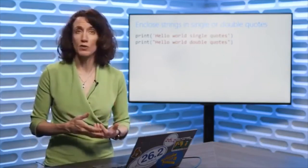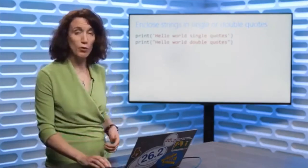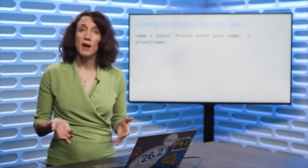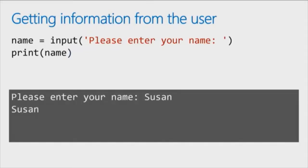Always use double quotes or always use single quotes. It's nice to know you can use either, because you might find examples online that switch back and forth. Another thing you might need to do is actually ask for information from the user when you're running a program. We do that by using the input function. With the input function, we pass in a message to display like 'please enter your name,' and whatever value the user types will be put into that name variable — stored there so we can print it out on the screen or use it in our code as needed.